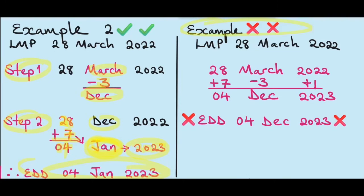In this wrong example, I'm going to show you why you don't add or subtract at the same time and why you have to follow the step-by-step procedure. Using the same LMP of 28th March 2022: if you add 7 to the 28th giving you 4th, subtract 3 from March giving you December, and add 1 to the year giving you 2023 — all at once — it gives you a wrong EDD of 4th December 2023. That's incorrect because it did not follow the step-by-step procedure. Otherwise you will get a wrong EDD.